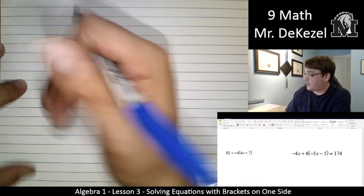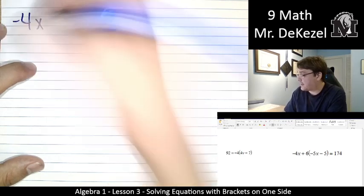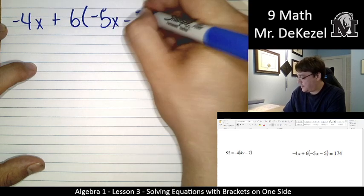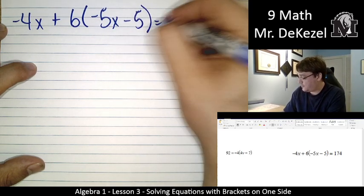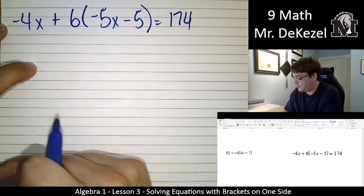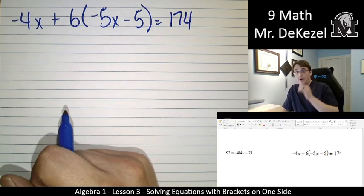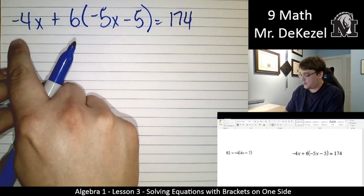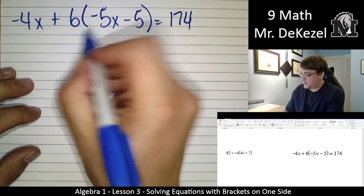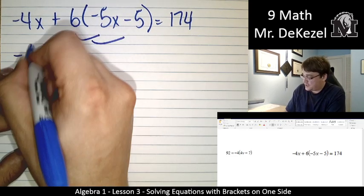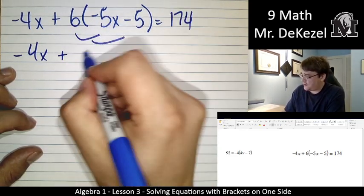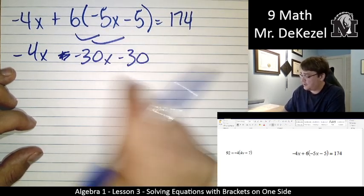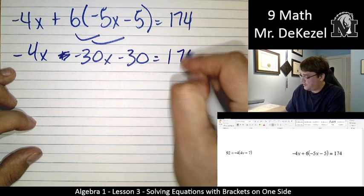Let's do a little bit of a bigger one. Minus 4x plus 6(minus 5x minus 5) equals 174. We're going to distribute the 6. Minus 4x plus 6 times minus 5, that's minus 30x. And 6 times minus 5 is minus 30. That all equals 174.